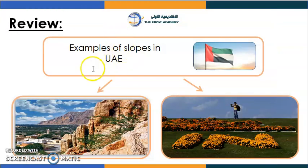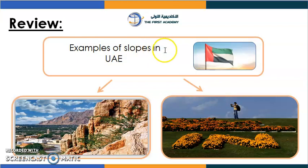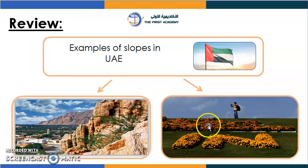Who can read what's written here? Examples of slopes in the UAE. Well done. As you can see, the mountains and also the hills — these areas are high areas. We can say high areas.